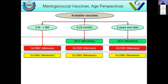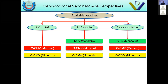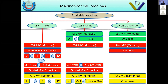For age nine months to two years and for two years and older, Menactra, Menveo, and Nimenrix are all approved. However, Menactra is not approved for two months to nine months, while Nimenrix and Menveo are approved as early as two months of age.